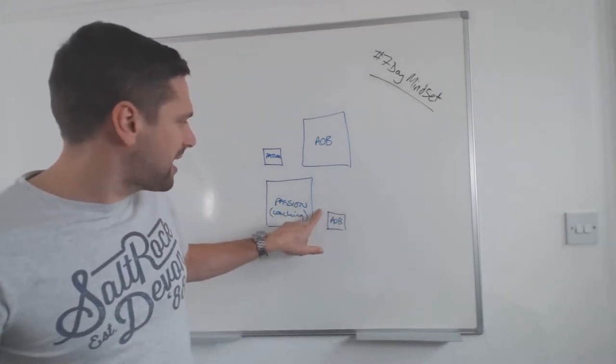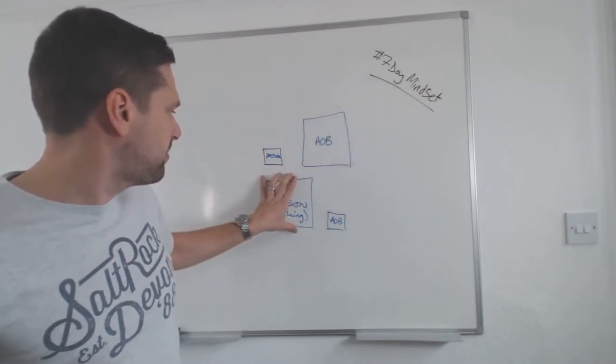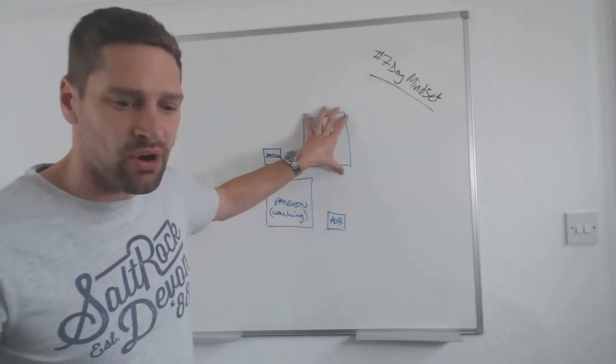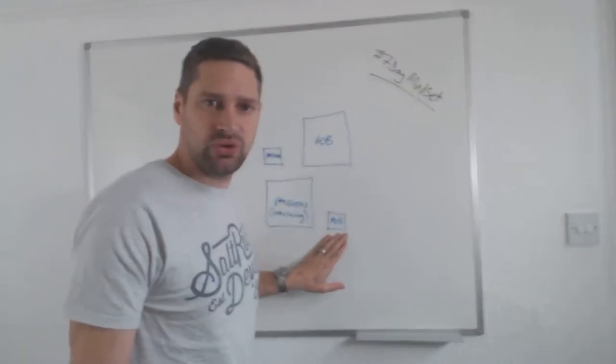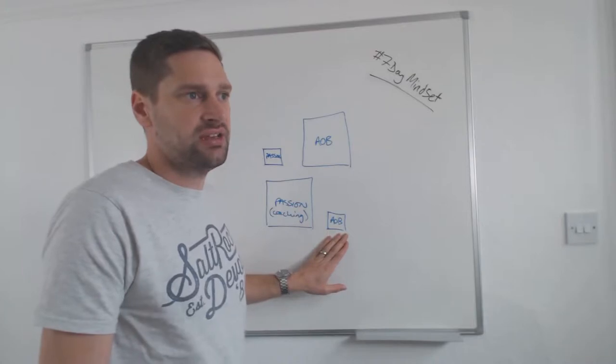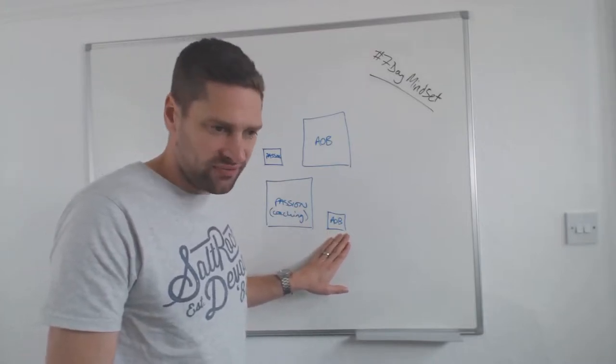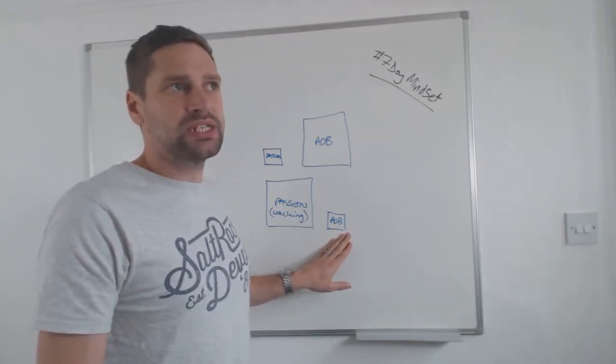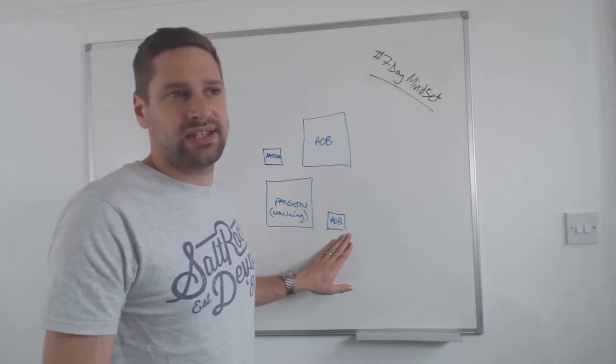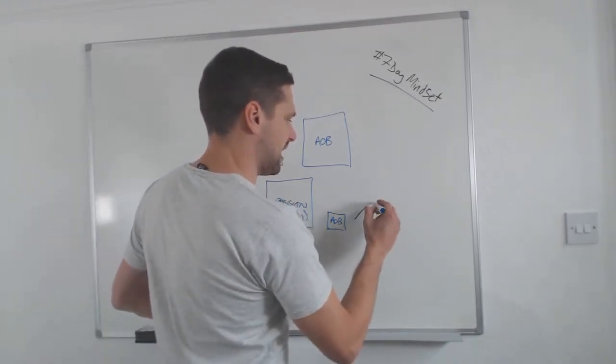And basically how I then manage this AOB box—now my AOB box could be this big passion box and this big AOB box, but it's not at all. Because I put so little importance on things like bookkeeping and accounts admin and marketing and stuff like that. I mean marketing is obviously important, but little importance in so much that I can either give it to somebody else. So that's the first thing that we can do: outsource.